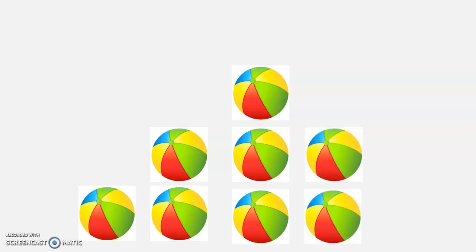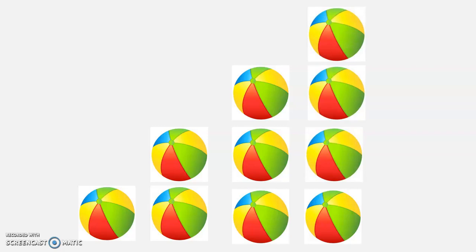One, two, three, four. Now we've got four balls. The first row we've got one, the next row we've got two, three and four. Our number pattern goes one, two, three, four.